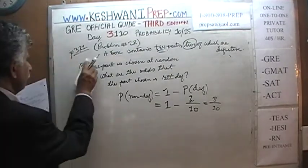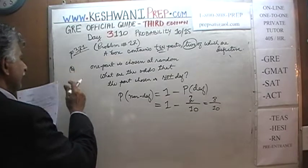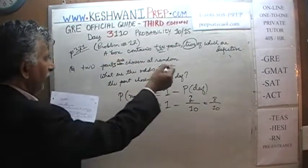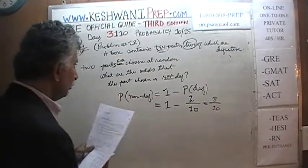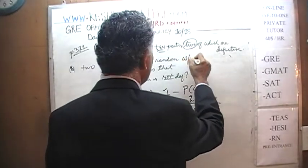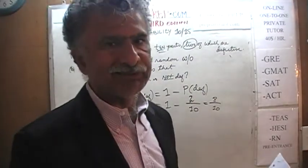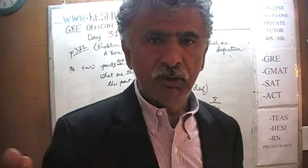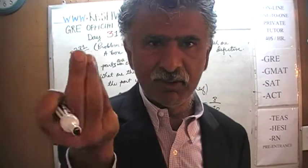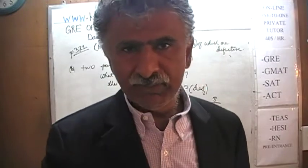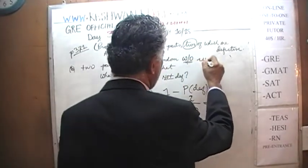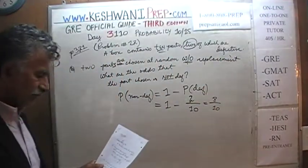Part B says that here we choose two parts at random. This was too simple. Because we are choosing two parts one after the other, the problem must tell us whether the first part chosen is going to be put back in the box or left out — in other words, are the two parts chosen with replacement? Here it says you must leave it outside: two parts are chosen at random without replacement.